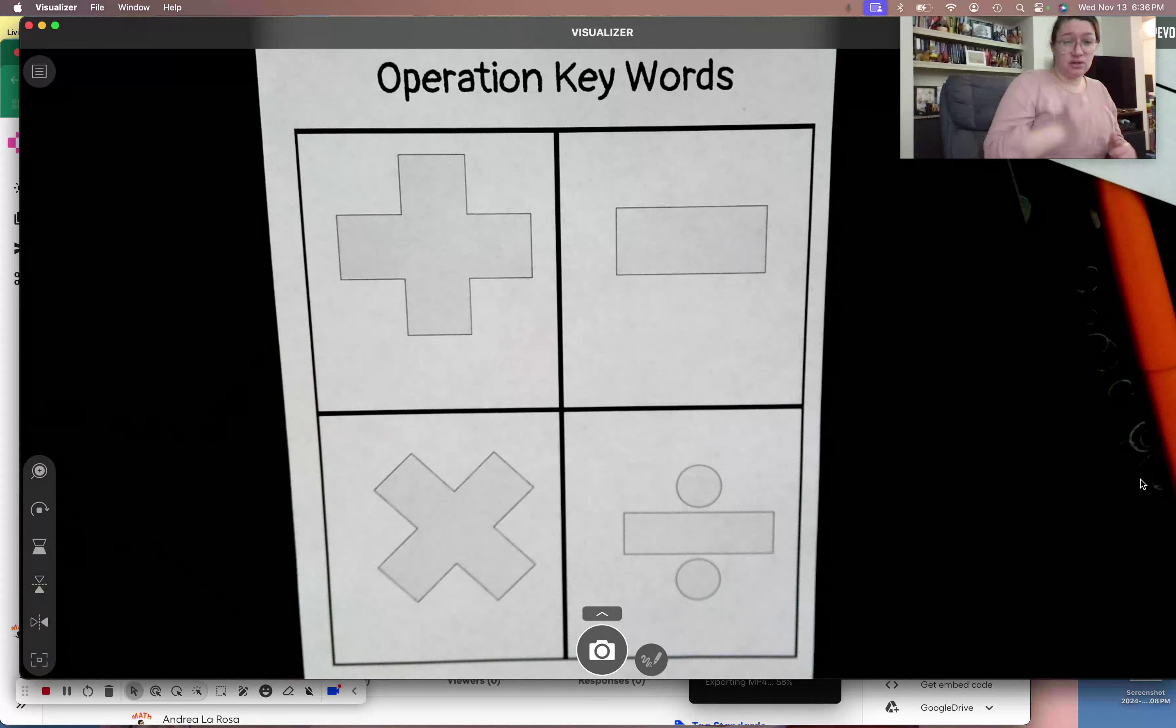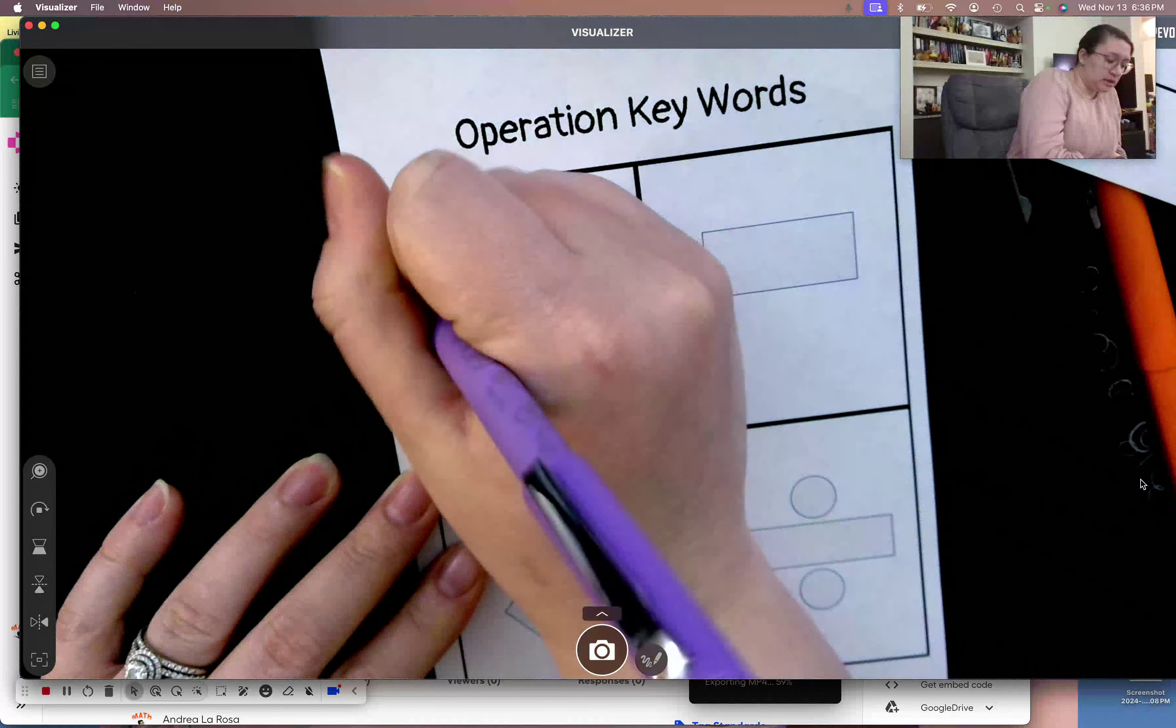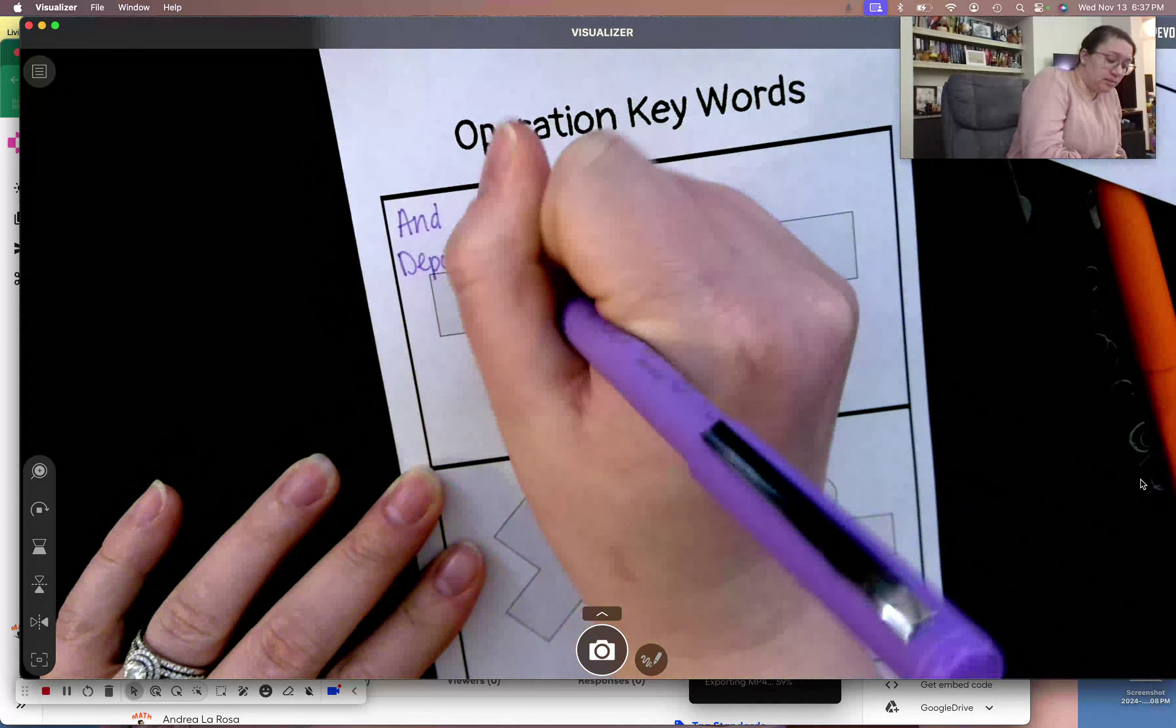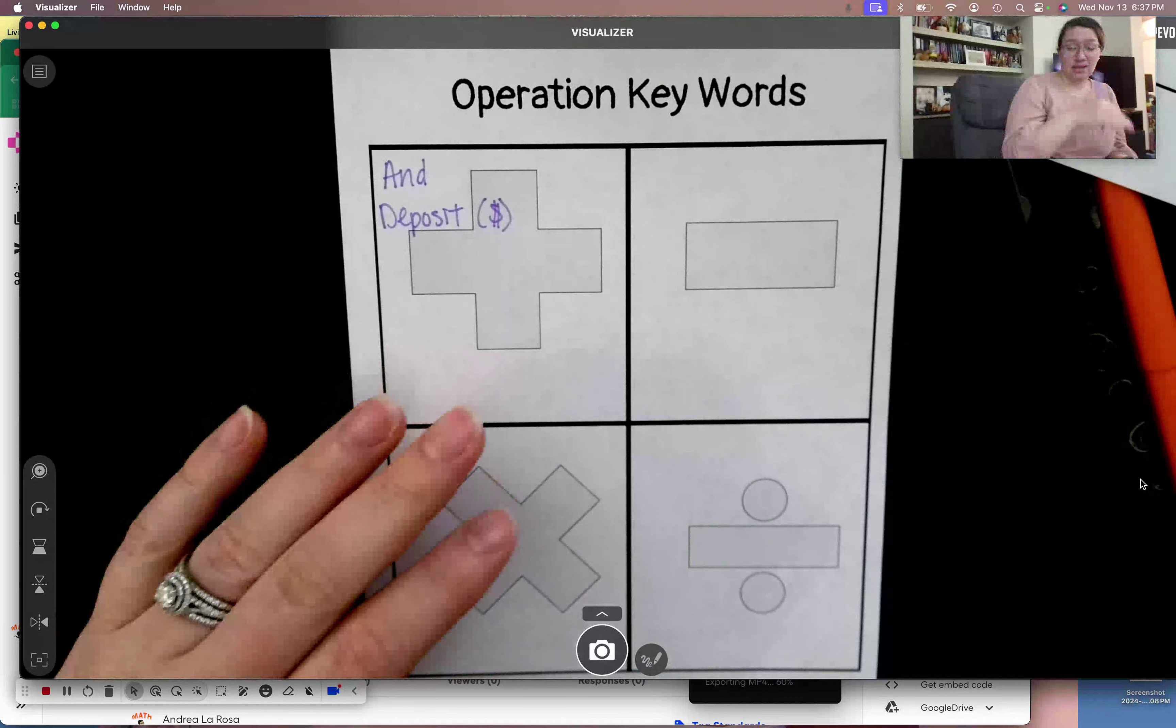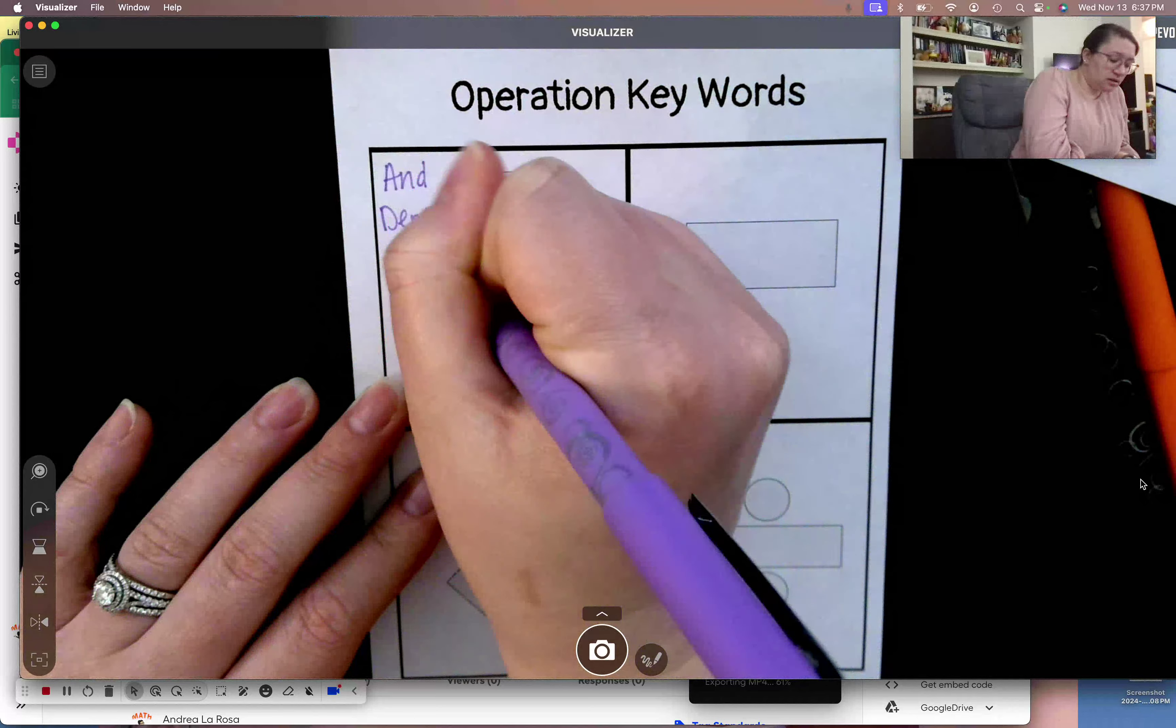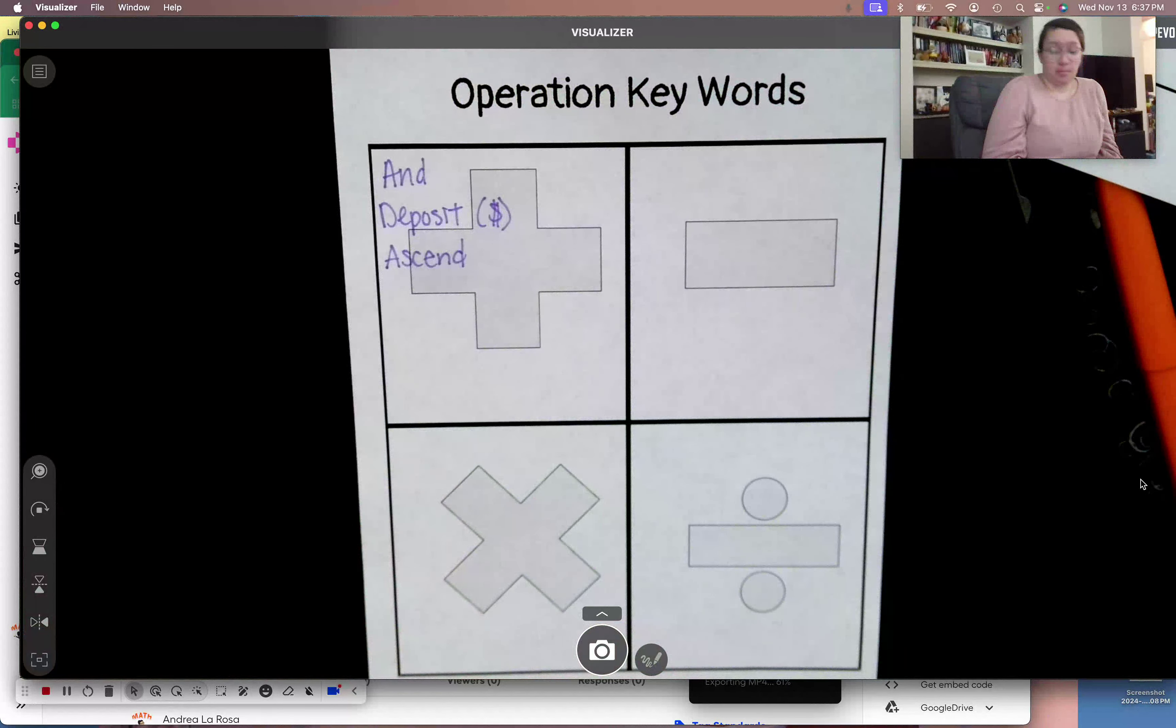Some of the words that have been tricking up students for addition are AND, deposit. Deposit is especially seen with money. It's like every two weeks when I get paid, my money gets deposited into my bank account. Money is added into my bank account. Ascend. It looks like when your teachers have you put things in ascending order. Ascending means you're going up. You're adding.